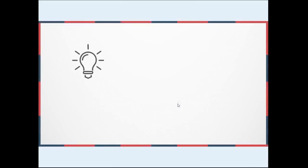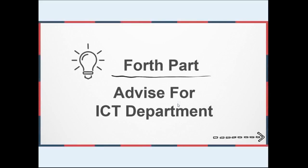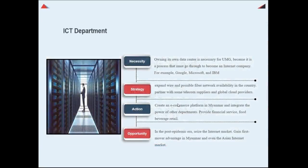For the fourth part, we are going to talk about the advice for the ICT department. Having its own data center is necessary for UMG, because it is a process that must be completed to become an internet company — for example, Google, Microsoft, and IBM all have their own data centers. In order to have our own data centers, we could expand network availability in the country, partner with telecom suppliers and global cloud providers. After that, we can create an e-commerce platform starting in Myanmar, integrating the power of other UMG departments — for example, financial services, food and beverage retail, and B2C business.